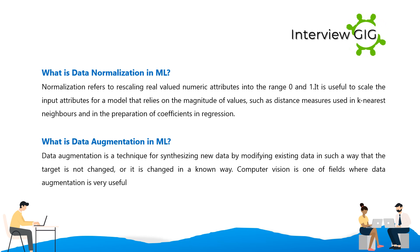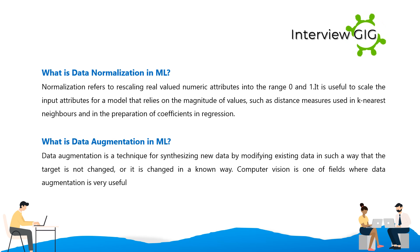What is data normalization? Normalization refers to rescaling real-valued numeric attributes into the range 0 to 1. It is useful to scale the input attributes for a model that relies on the magnitude of values, such as distance measures used in K-nearest neighbors and in the preparation of coefficients in regression.